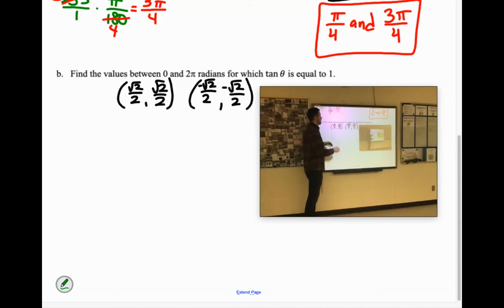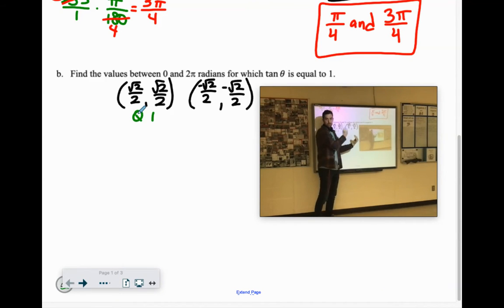Now when are they both positive? That would be in quadrant 1. When are they both negative? That would be the bottom left, which is quadrant 3.